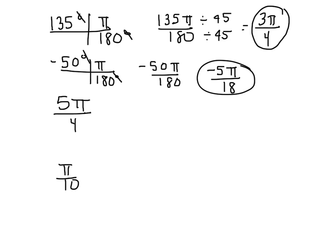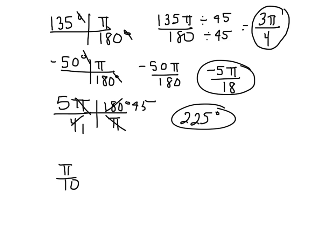For 5 pi over 4, I'm going from radians to degrees, so pi goes on bottom and 180 on top — pis cancel. 4 goes into 180 giving 45, then 5 times 45 gives 225 degrees. For pi over 10: multiply by 180 over pi, pis cancel, 10 goes into 180 eighteen times, giving 18 degrees.